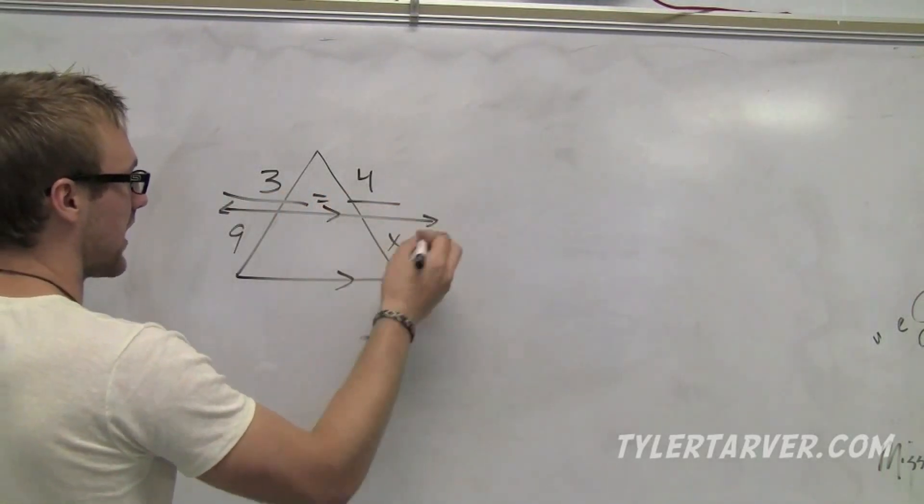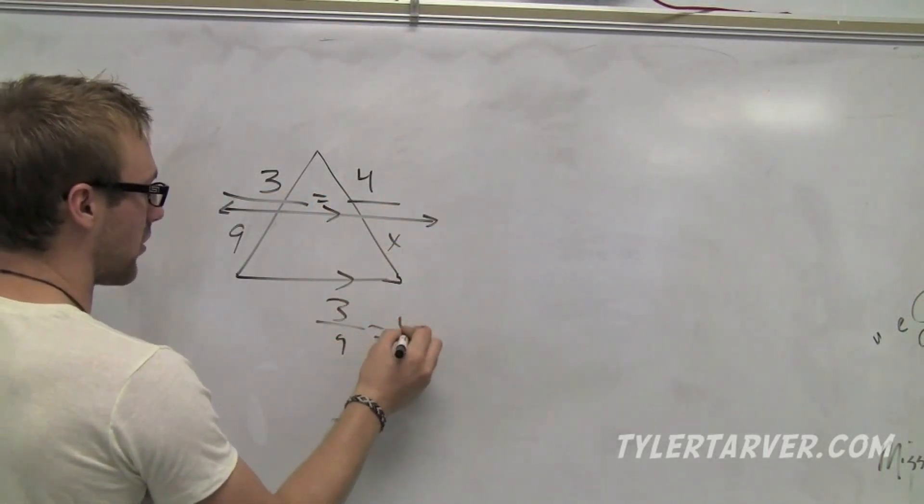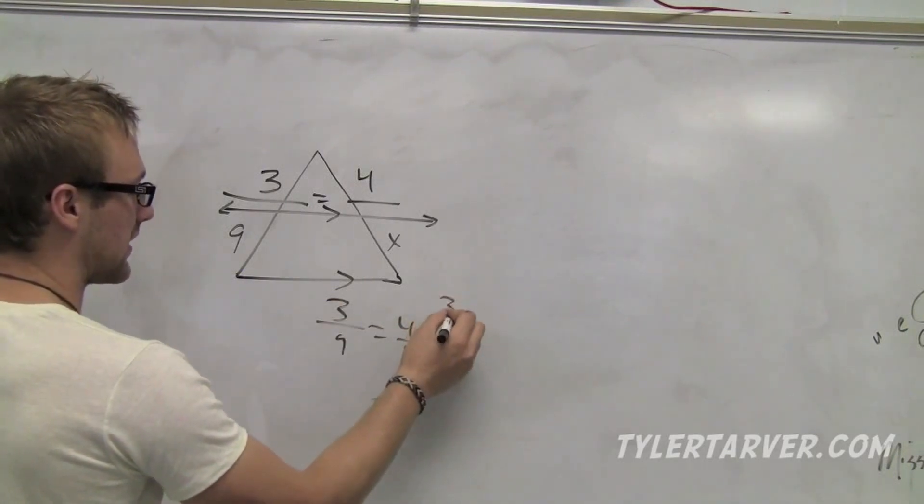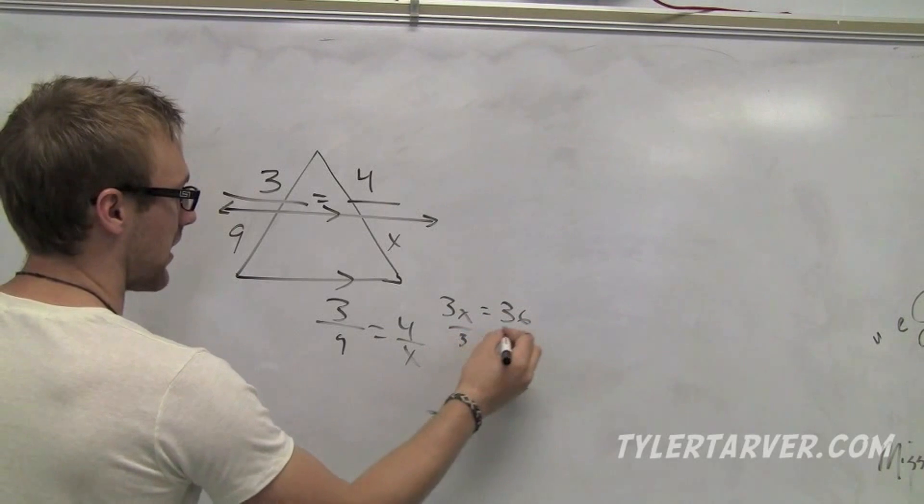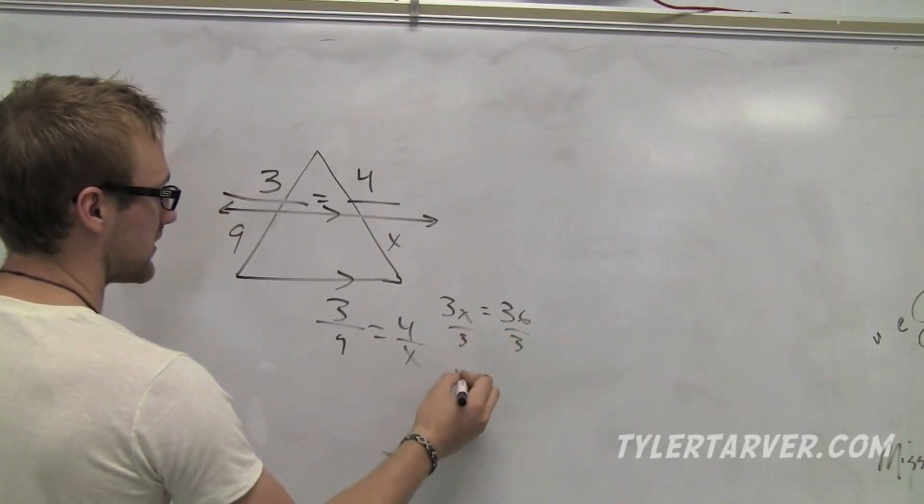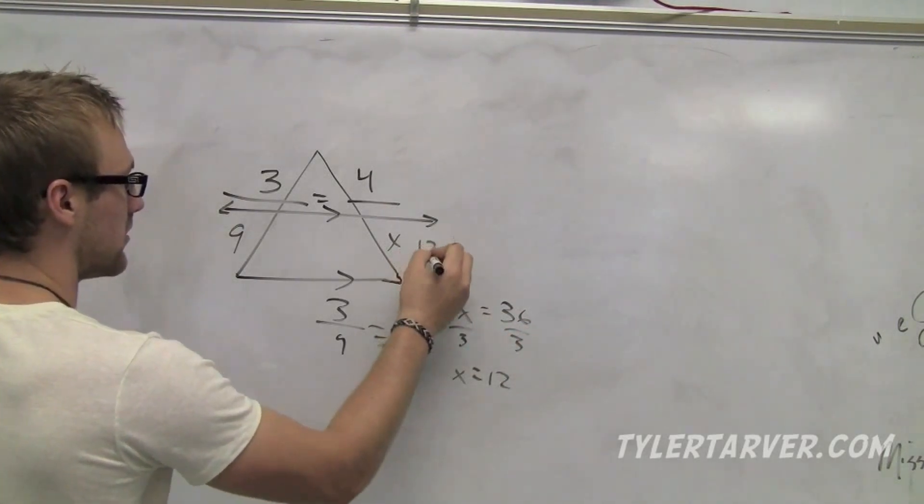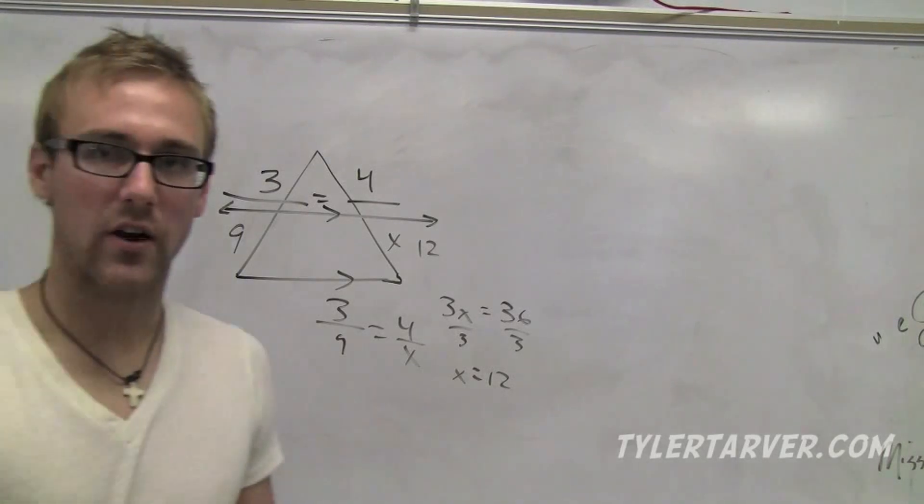That over that equals that over that. 3 over 9 equals 4 over x. We cross-multiply. That's 3x equals 9 times 4 which is 36. Divide by 3. x equals 12. Just like that.